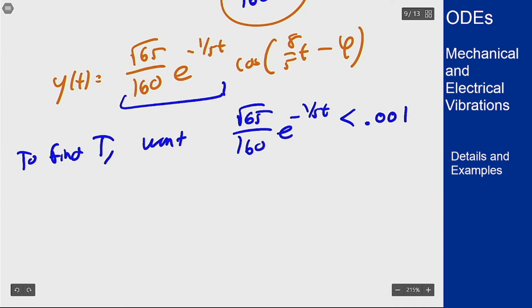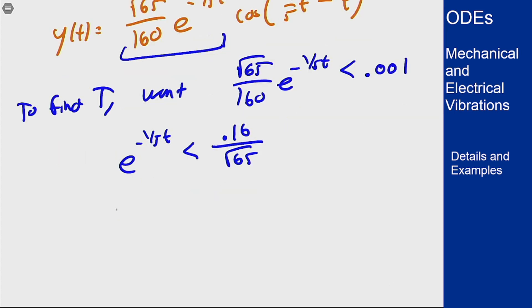We can then solve for this. This means that e to the negative 1 fifth t should be less than 0.16 over root 65 so t should be bigger than negative 5 log of 0.16 over root 65. That's something of that expression there solving for t and this comes out to be approximately about 19.6 seconds. After about that much time, about 20 seconds, it'll be within this little strip around. It'll keep oscillating forever according to our model here but we know it's within 0.001 after about 20 seconds. So that answers all the questions here in this problem.